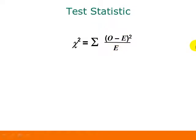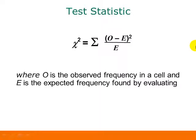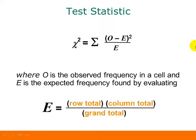Doing that for every cell in a contingency table is pretty tedious by hand. Part of the reason is that to find the expected frequency in the first place, we have to use another formula: for each cell, we take the row total times the column total and divide by the grand total for the whole table.